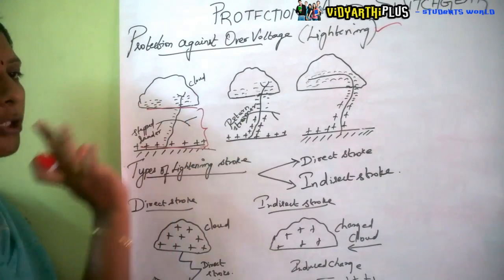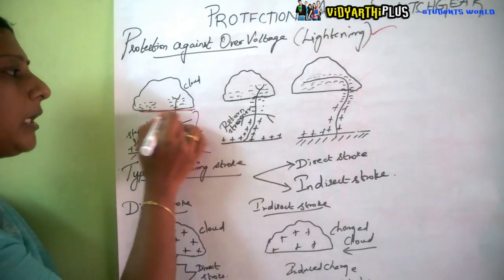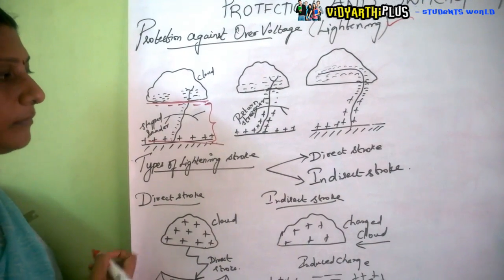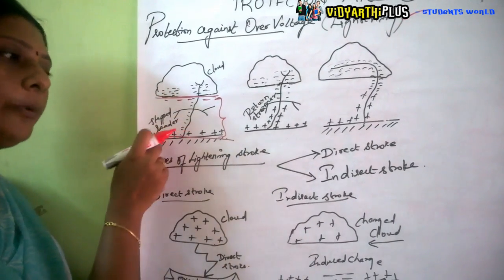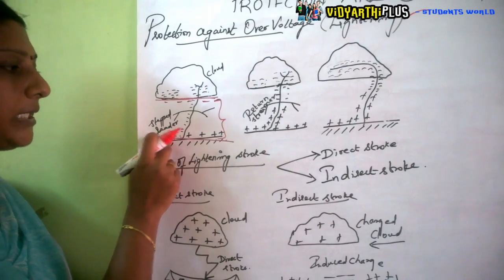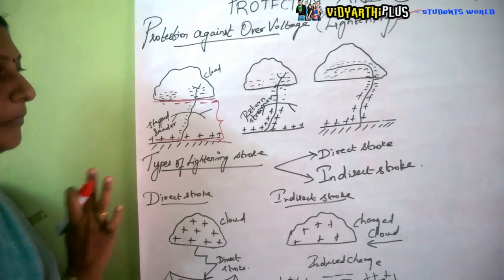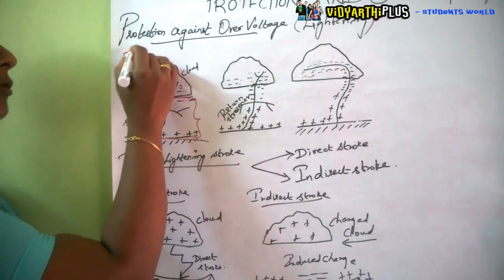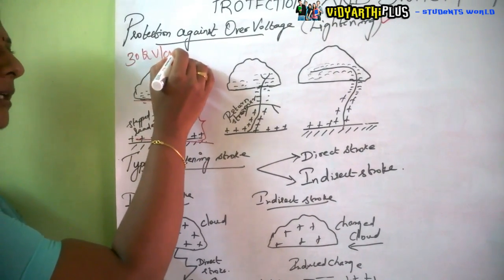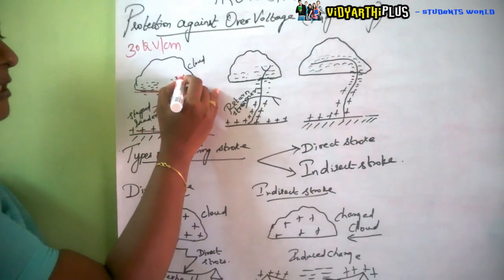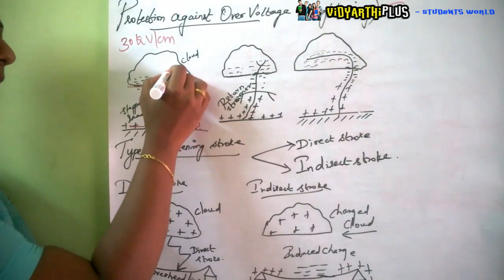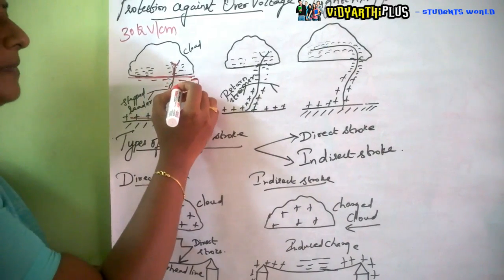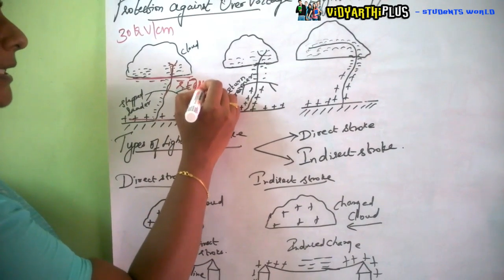Assume that the cloud carries negative charge, so the bottom of the cloud is occupied with negative charges. Immediately, the opposite charge — positive charge — accumulates in the ground. When the potential gradient exceeds 30 kV per centimeter, the negative charges start coming down in what is called a stepped leader.